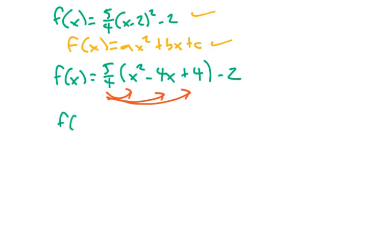Then distribute the 5 fourths across the parentheses, like this. And our function would look like 5 fourths x squared. The 5 fourths times the 4x, the 4s would divide out, leaving me with minus 5x. And again, the 5 fourths times the 4, the 4s would divide out, leaving me with positive 5. And then I would just combine like terms.